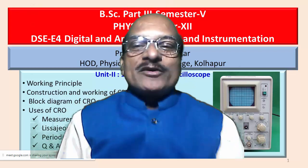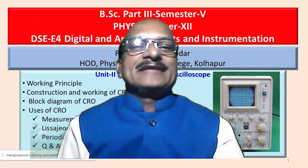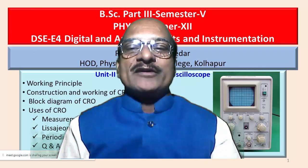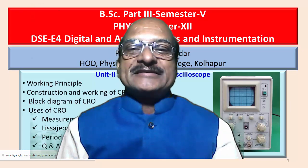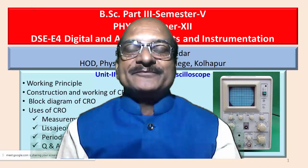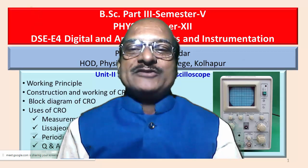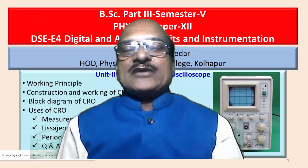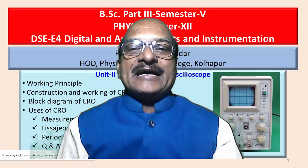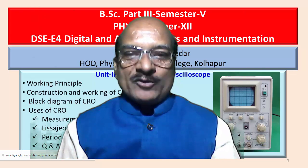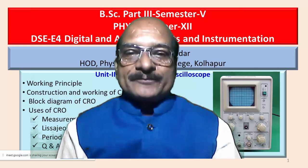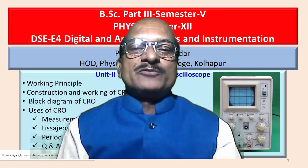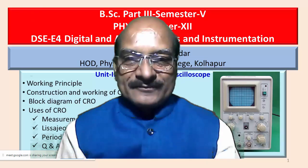Today we are going to study one of the important topics entitled Cathode Ray Oscilloscope. This is one of the important instruments used in physics and electronics laboratories for the measurement of frequency of the input signal. This cathode ray oscilloscope is also abbreviated as CRO. CRO stands for Cathode Ray Oscilloscope. This instrument gives visual indication of the input signal waveform on its screen.